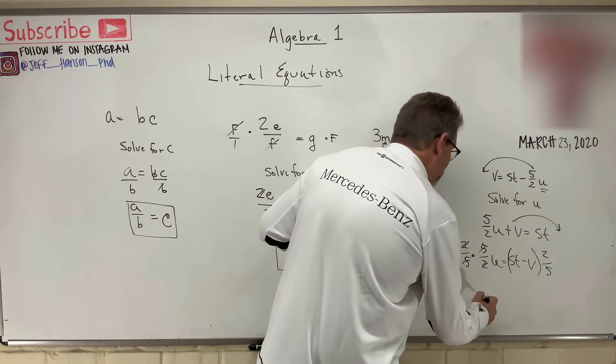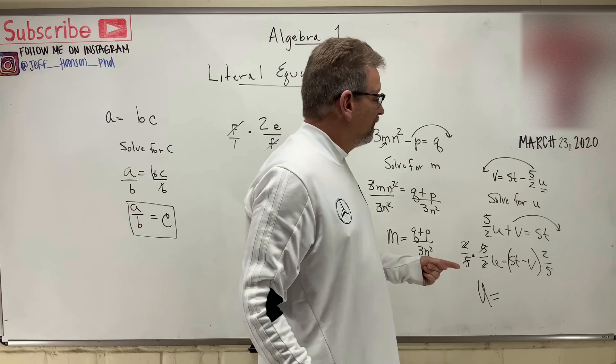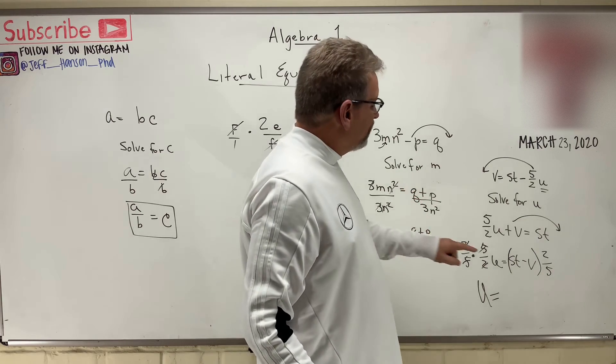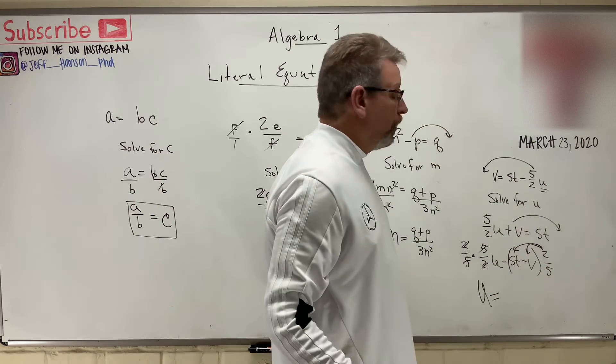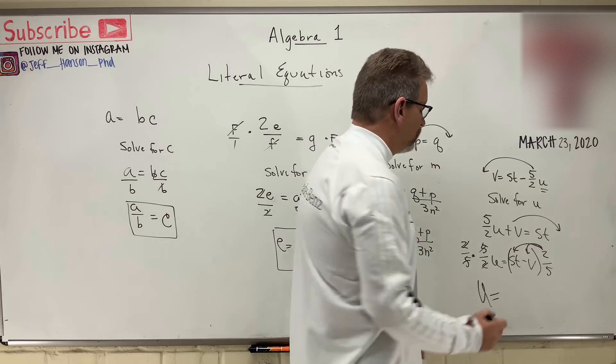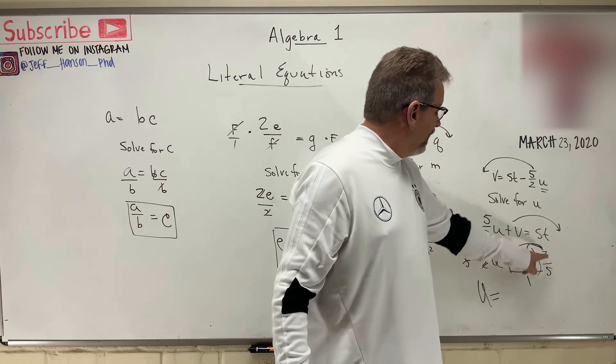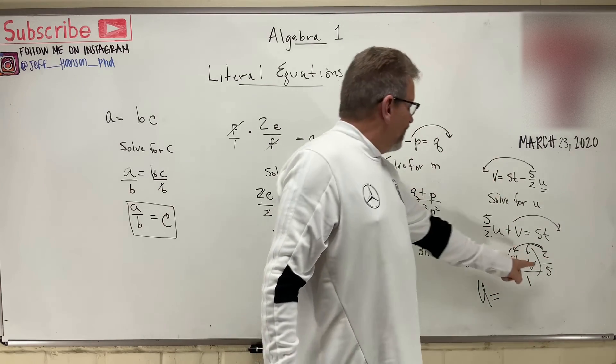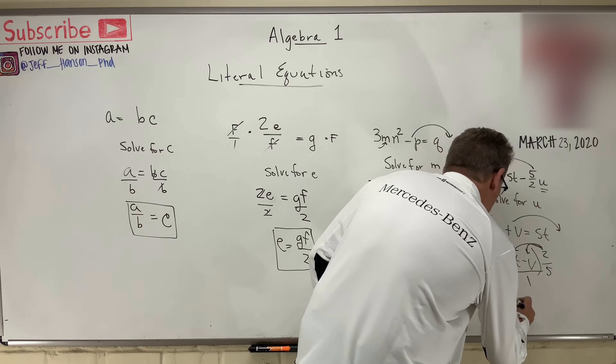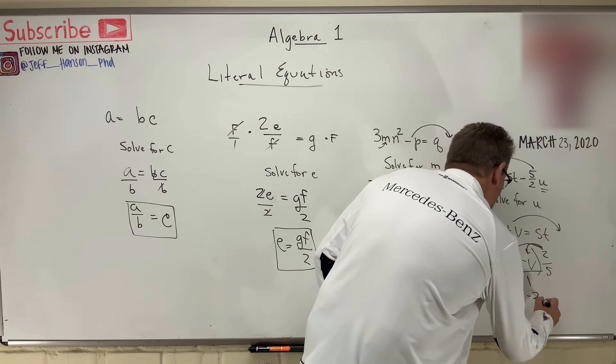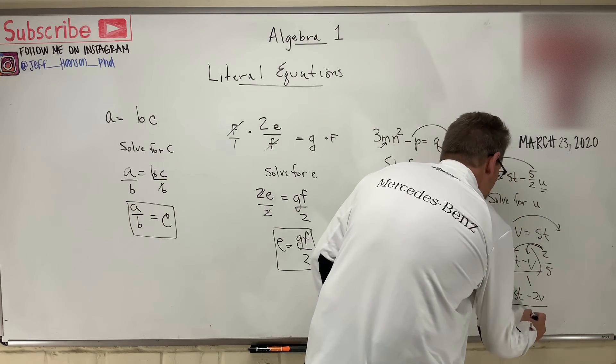So, the 2's cancel out. The 5's cancel out. I'm left with U is equal to... Okay, what do we do here? There's a couple ways you can write this. You can distribute this by going multiplying this times this guy and that guy. Or, you can multiply just the top number. Because remember, this whole thing is over 1, isn't it? Okay? So, the whole top gets multiplied by 2. And the bottom gets multiplied by 1. So, let's do that. So, you get this. 2st minus 2v, right? Divided by 5 times 1. Just 5.